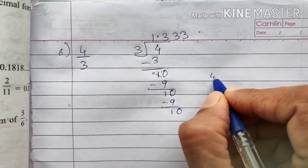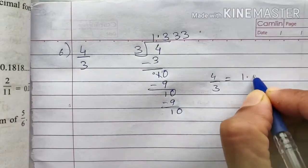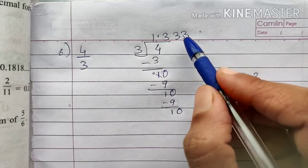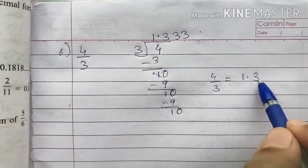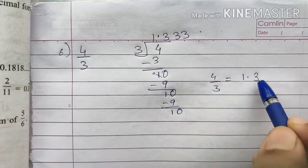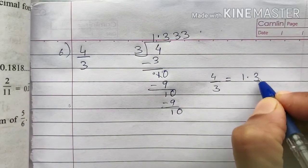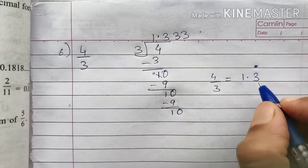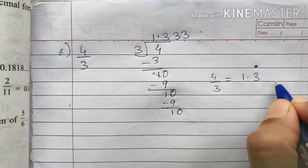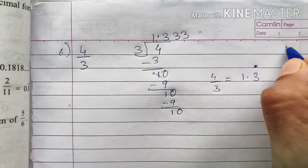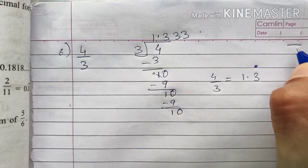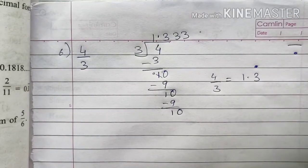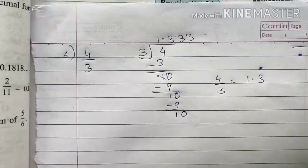So your answer is 1.3, where 3 is the repeating digit. Since only one digit is repeating, we write it once and put a dot above it. If more than one number repeats, we draw a line above all of them.